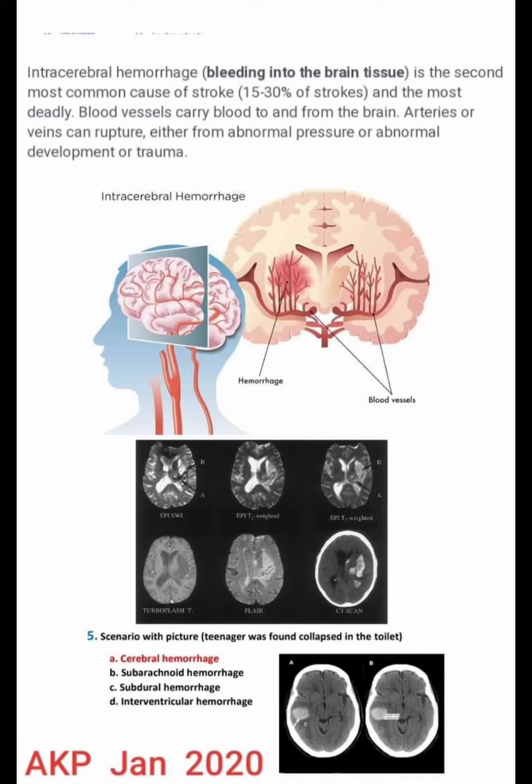There is a question that comes up on the exam: a scenario with a picture where a teenager was found collapsed in the toilet. There is a history of a teenager found collapsed in the toilet, and the radiological images are showing cerebral hemorrhage.